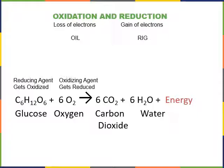Oxidation is a chemical reaction where the reactant loses electrons. Whenever a chemical is oxidized, another chemical called the oxidizing agent must accept electrons, or be reduced. Reduction is a chemical reaction where the reactant gains electrons. And whenever a chemical is reduced, another chemical called the reducing agent must provide the electrons.